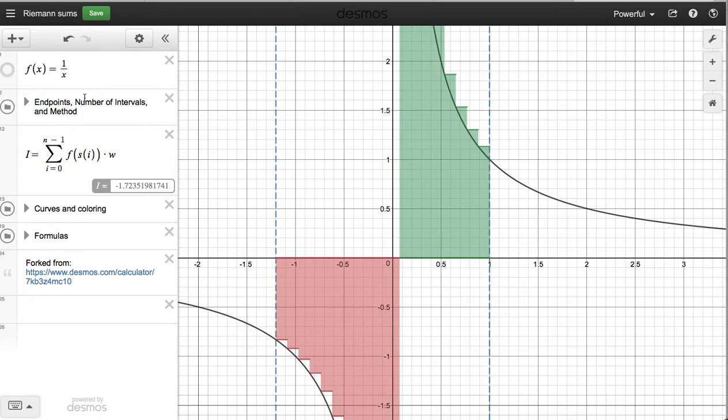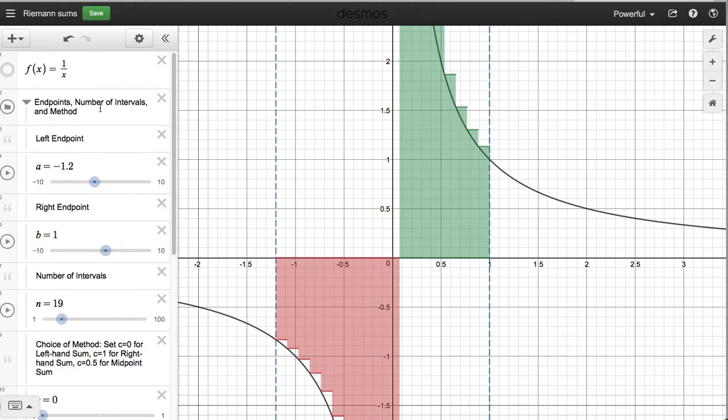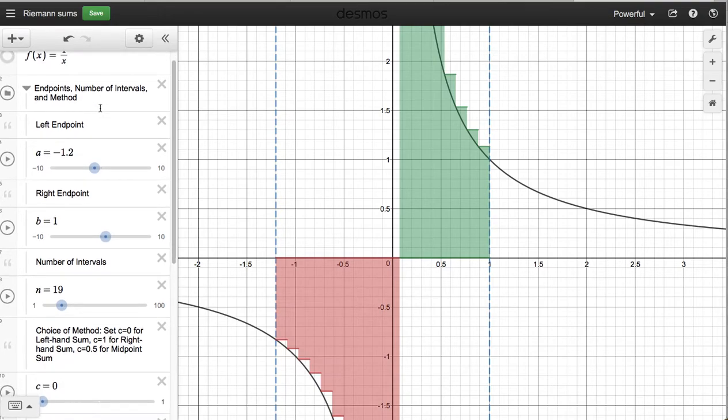Now, what you'll want to do is adjust the endpoints, the number of intervals, and the method used. And that all is located at the second entry point here. If you click this little arrow, a dropdown displays. And we can choose our left endpoint, our right endpoint, and our number of intervals, as well as the method.